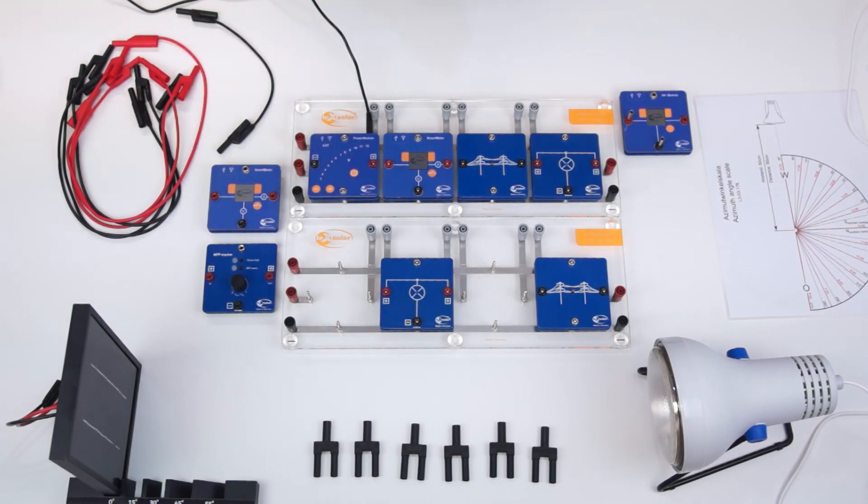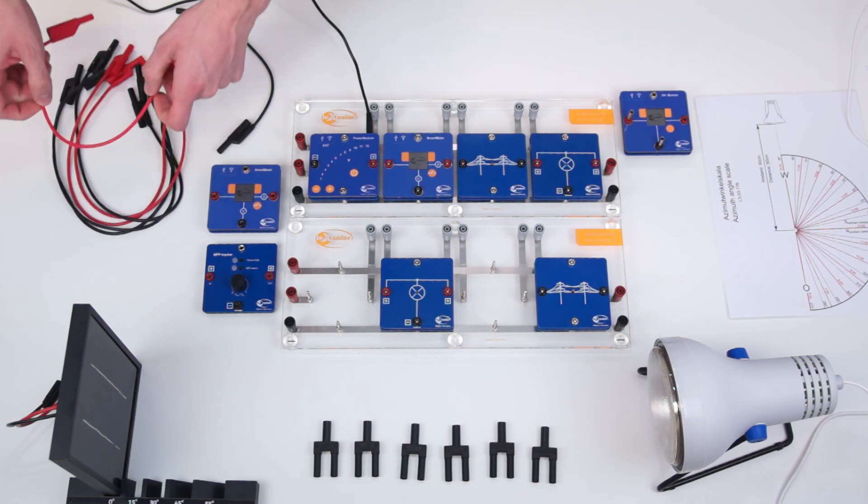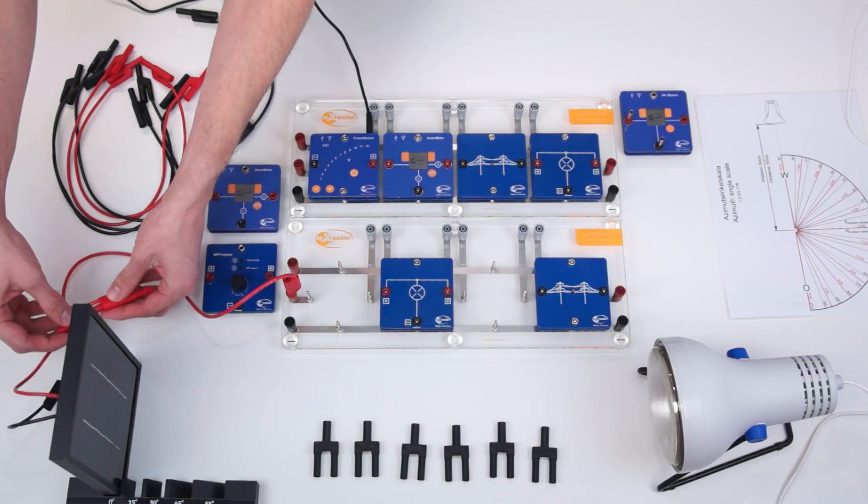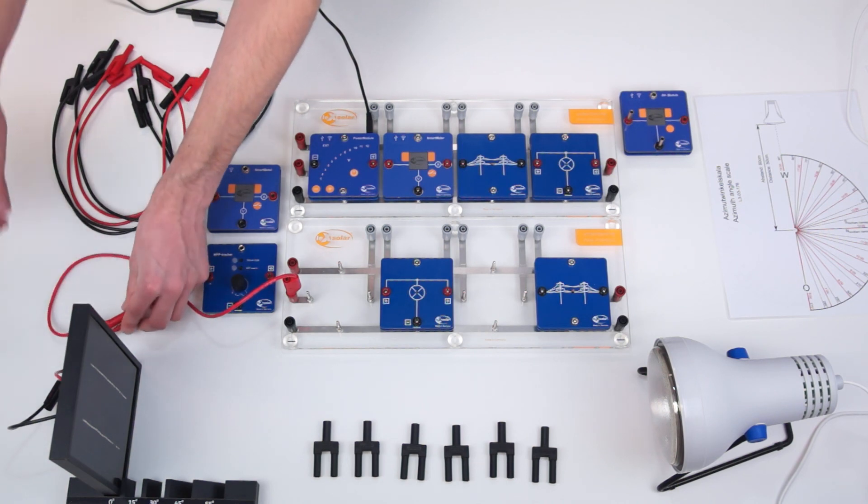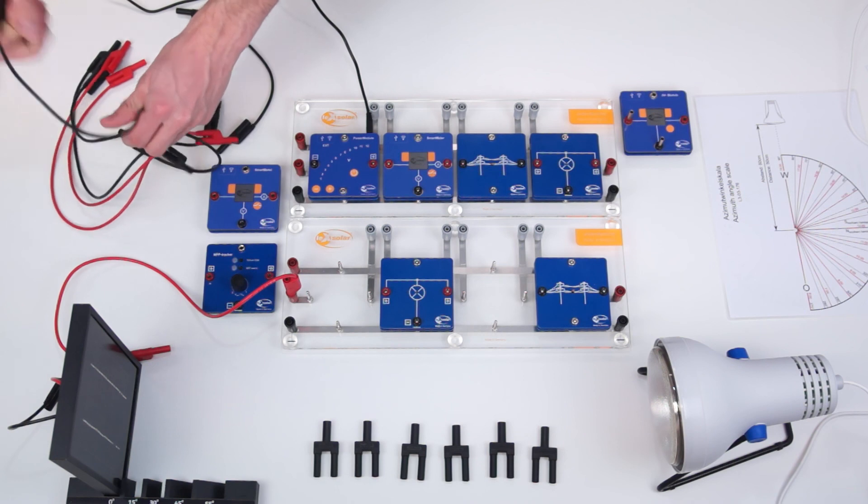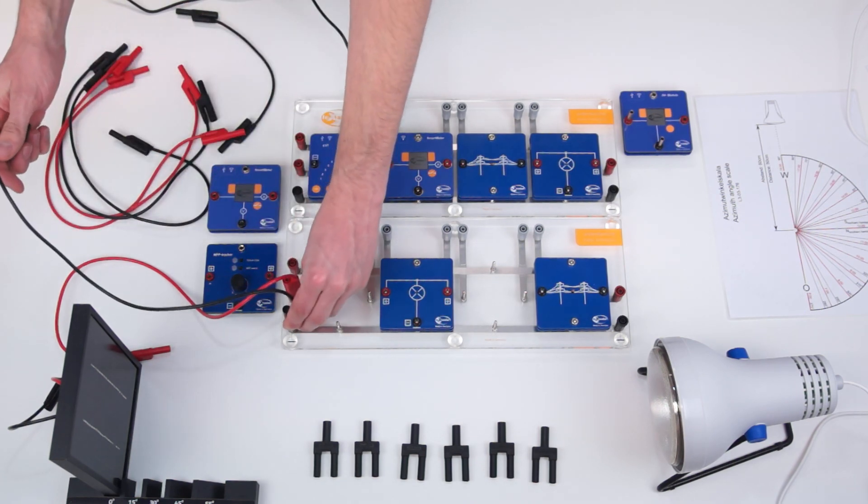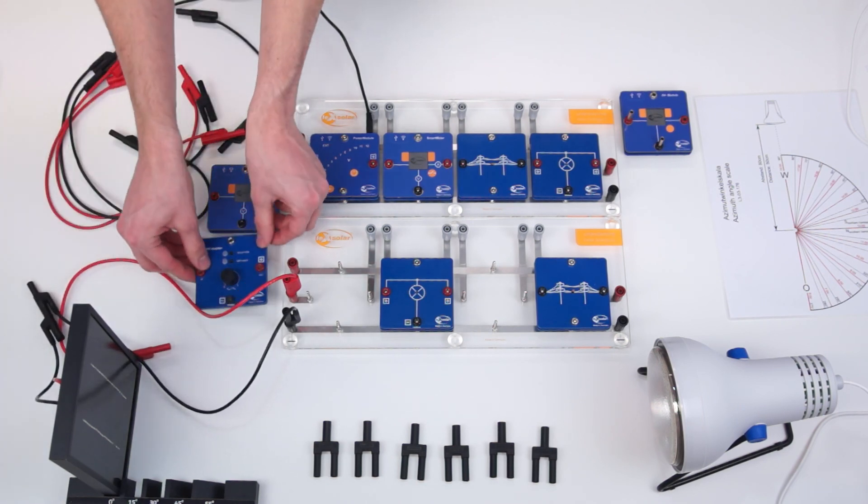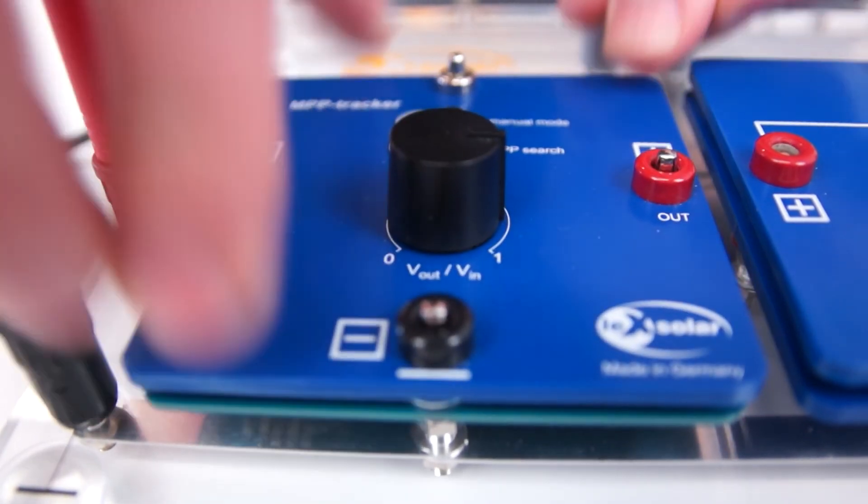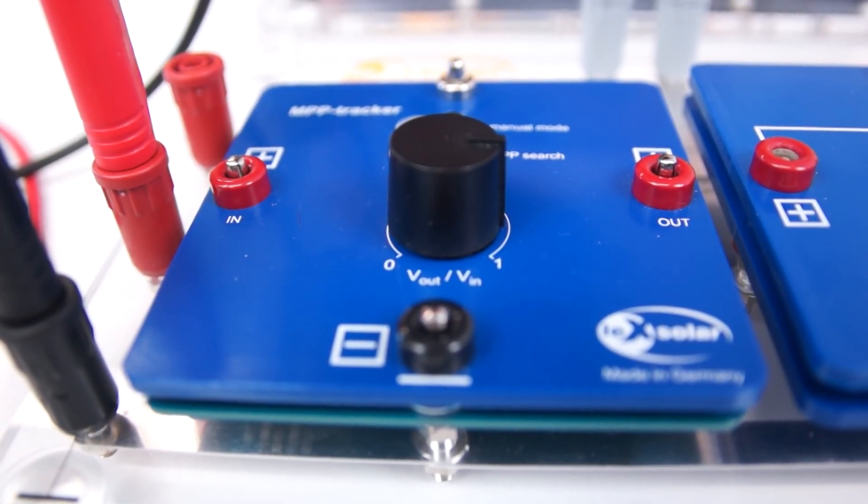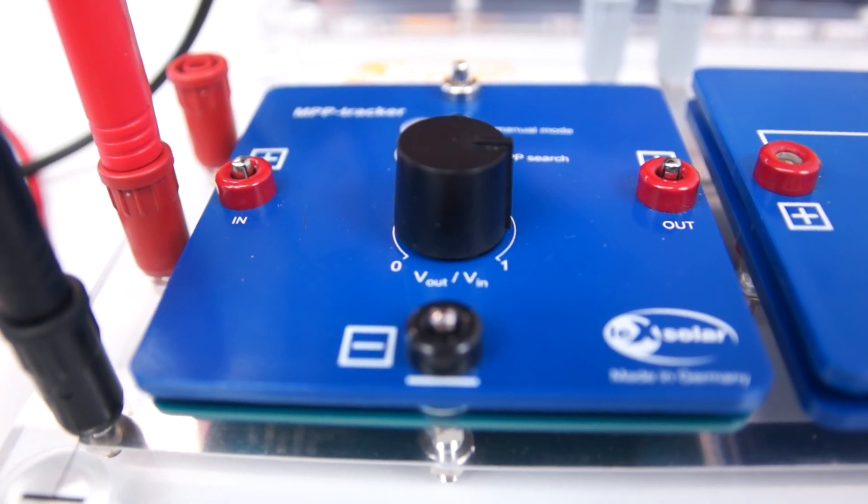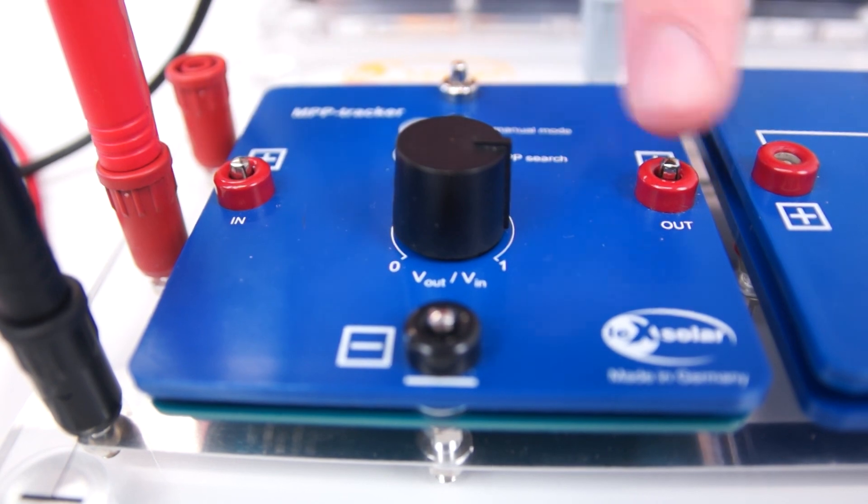In our experiment, we connect the solar module to the strand and stick the MPP tracker between the solar module and the house.